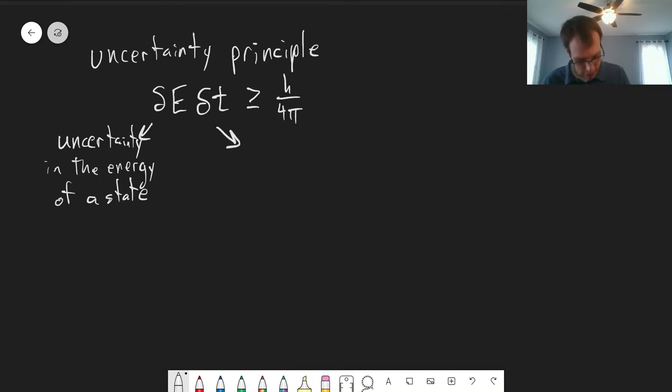And delta T here is the lifetime of an excited state before it decays to the ground state.